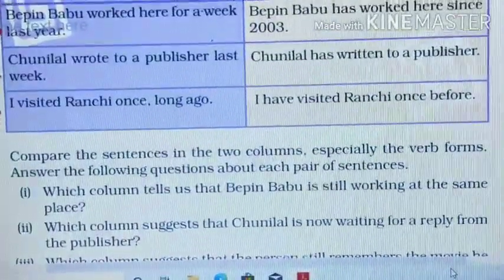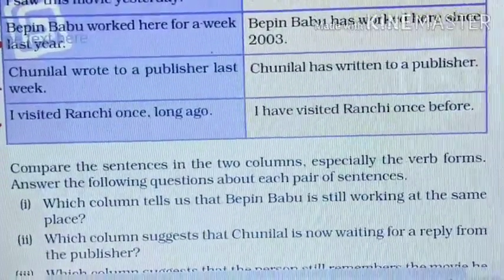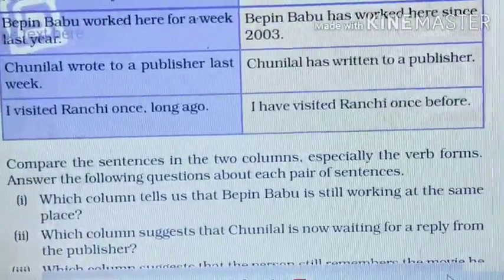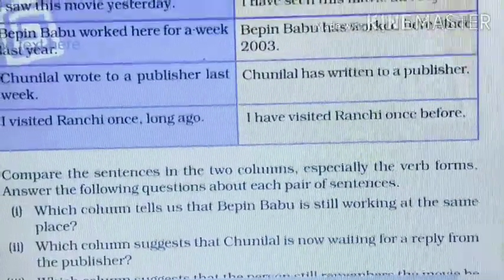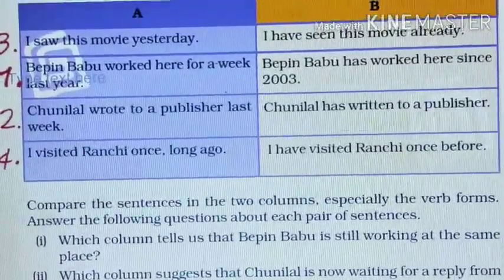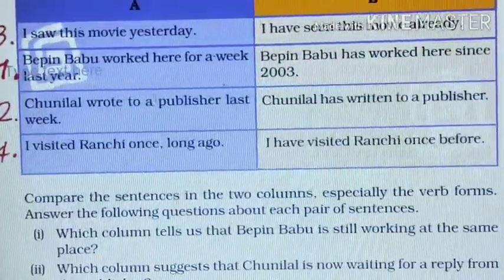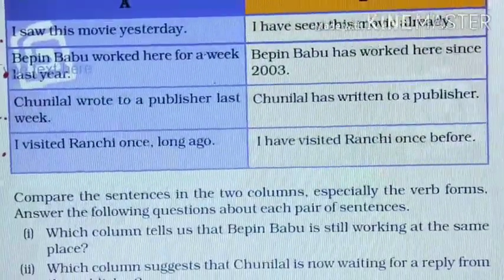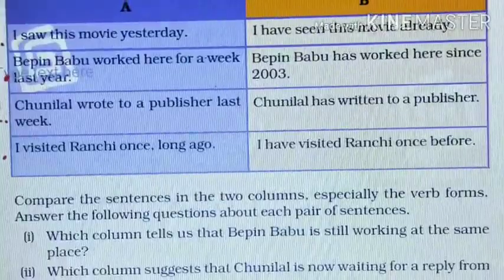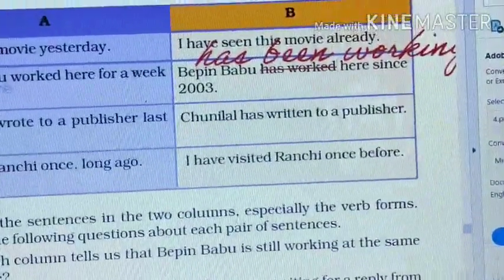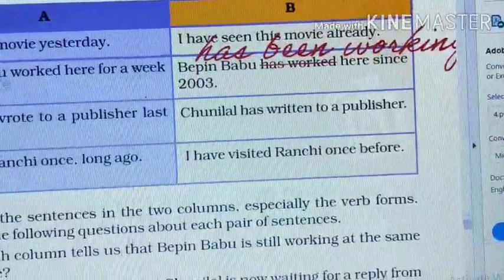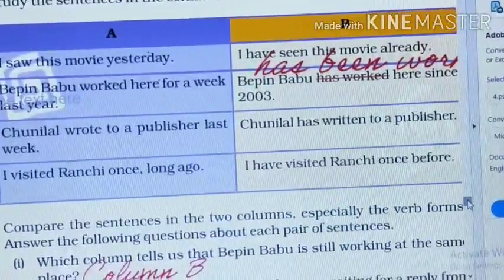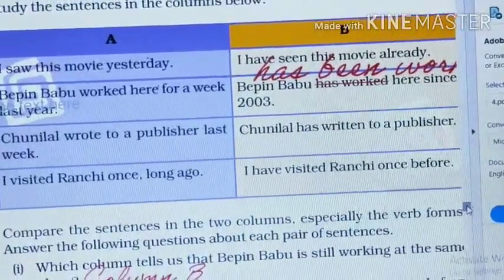Now we will read the first question: Compare the sentences in the two columns, especially the verb forms, and answer the following questions about each pair. First: which column tells us that Bibin Babu is still working at the same place? Column A says 'Bibin Babu worked here for a week last year,' and column B says 'Bibin Babu has been working here since 2003.' The answer is column B.